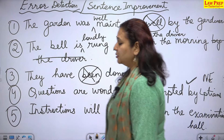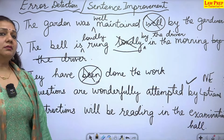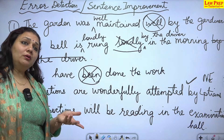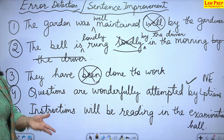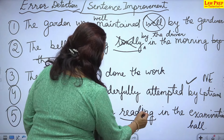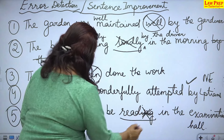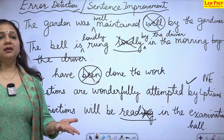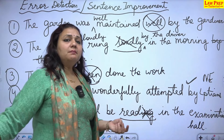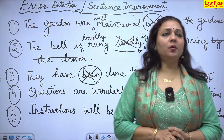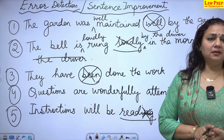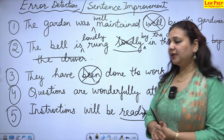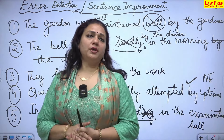Question 5: 'Instructions will be reading in the exams' — instructions will not read on their own; they will be read by somebody. No ING form is required here. Instructions or any object needs a subject to complete the sense. The error is 'reading' — it should be 'read' (V3 form) in passive voice: 'Instructions will be read in the exams.'